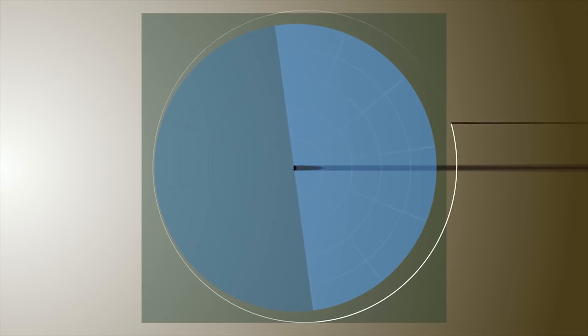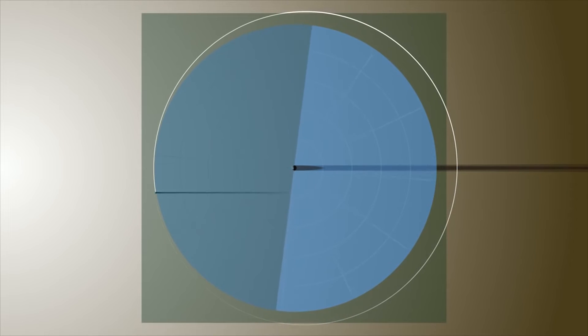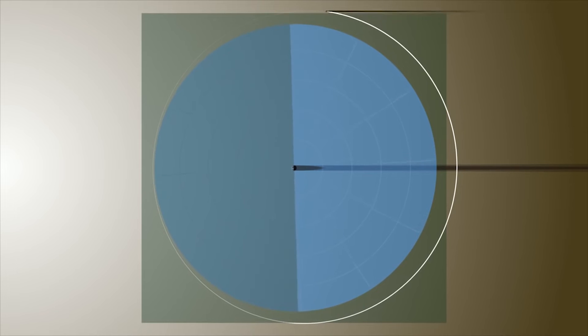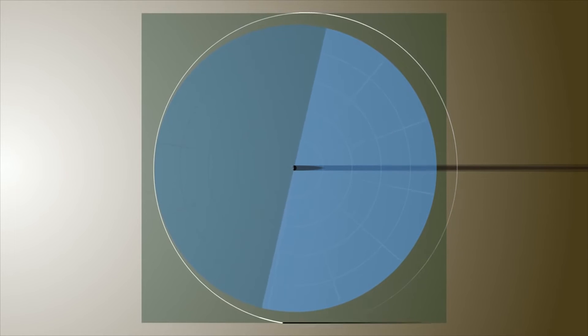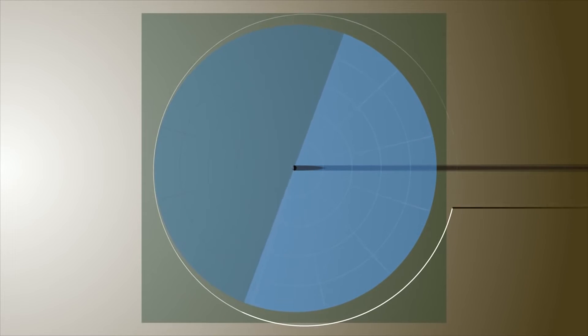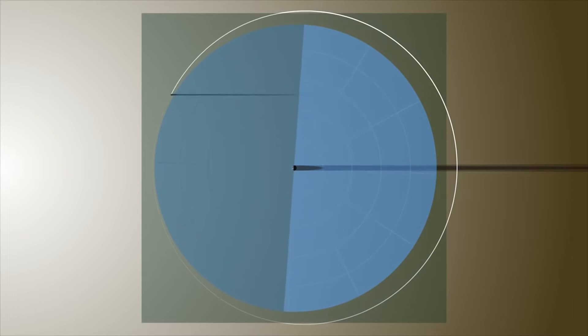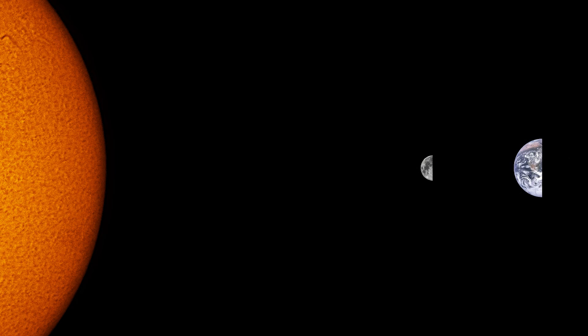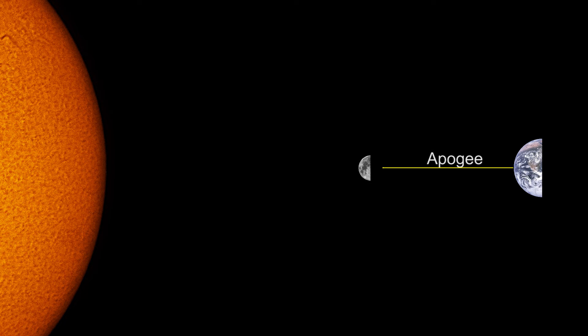Another contributing factor is the Moon's orbit. Like the orbit of the planets of our solar system, it isn't circular — rather, it's elliptical. As we can see, the orbital path of the Moon is slightly elongated in this simulation. When the Moon is close to Earth in its orbit, it is called perigee. At its furthest point from Earth, it's called apogee.